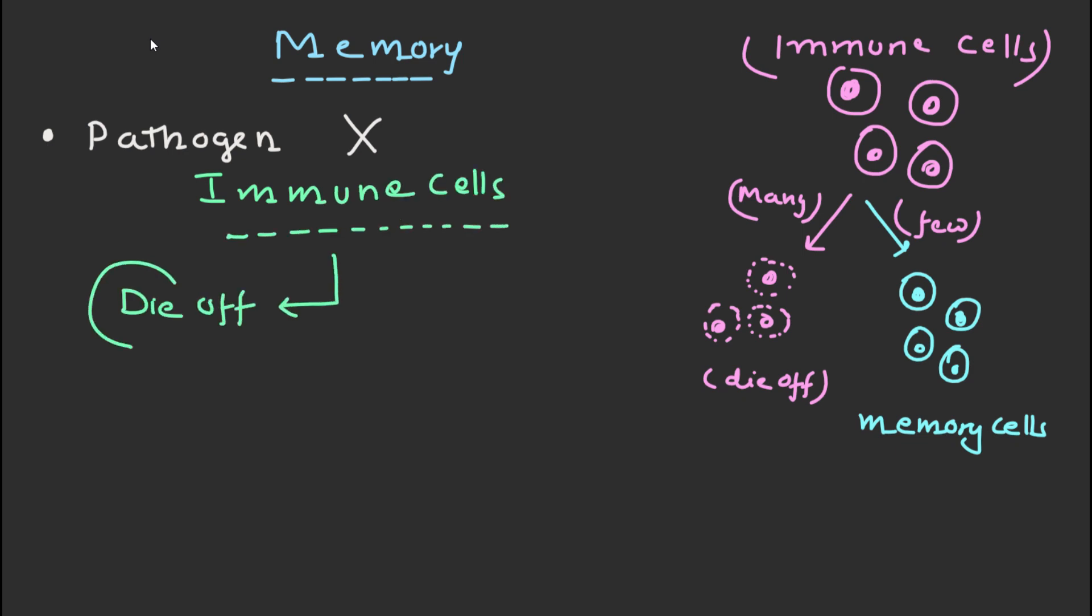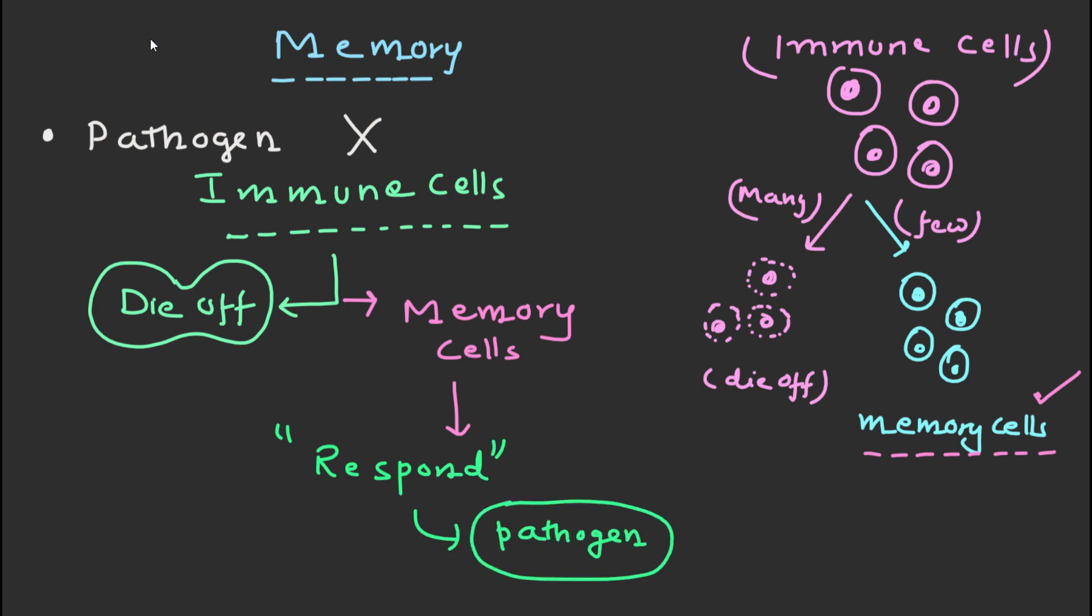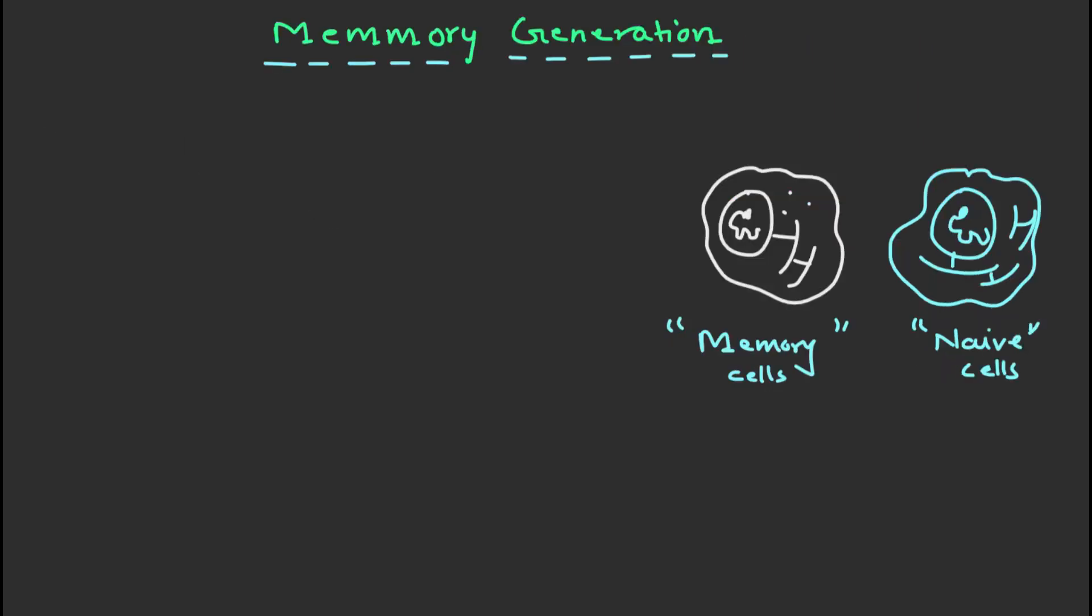However, a small amount of them persist as memory cells. These memory cells can quickly recognize and respond to the same pathogen if it enters the body again. This is how our immune system can remember past infections.